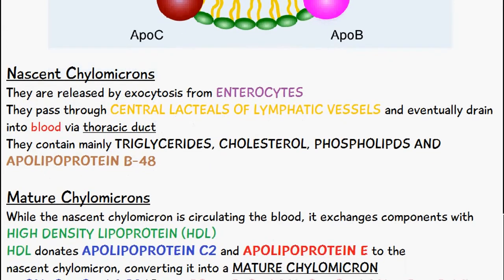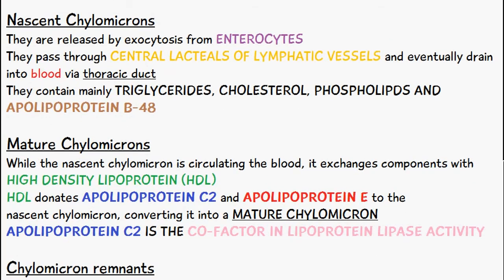The first stage is the nascent chylomicron, which is at the beginning when the chylomicron is initially formed. It's released from the enterocytes via a process called exocytosis, then passes through the central lacteals of the lymphatic vessels and into the lymphatic system, and eventually drains into the blood via the thoracic duct. When formed at this stage it's known as a nascent chylomicron.